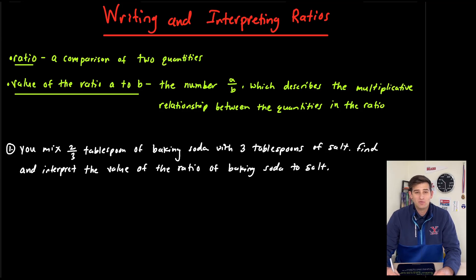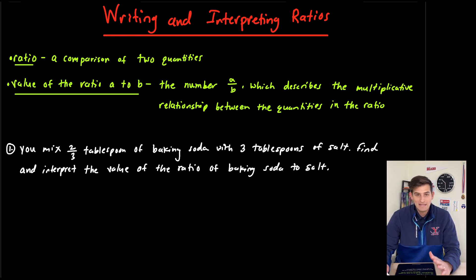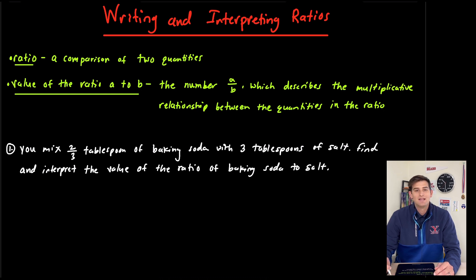In this video, we're going to talk about how we can write and interpret ratios. So what is a ratio? It is simply just a comparison of two quantities. We can also find what's called the value of the ratio A to B, which would be the number A divided by B. This describes the multiplicative relationship between the quantities in the ratio.